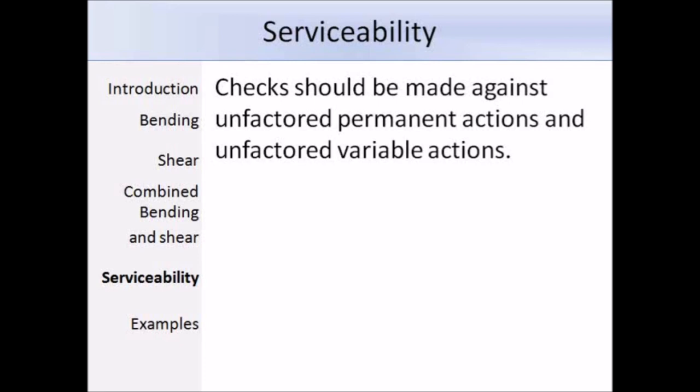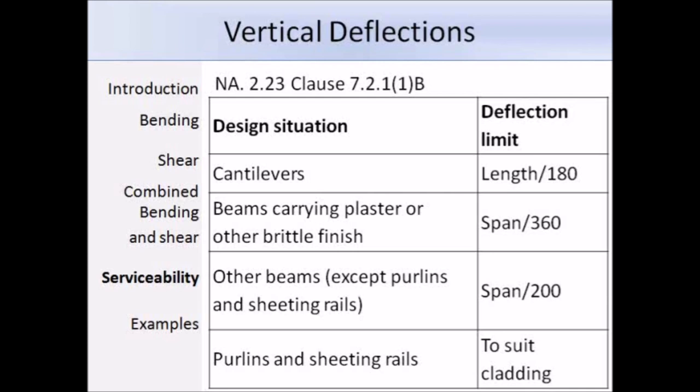EN 1993, Part 1-1, Clause 7.2.1 states that the National Annex should be referred to when determining the maximum allowable vertical deflection. The following table is taken from NA 223, Clause 7.2.1, Part 1-B. For a cantilever, the deflection limit is the length over 180. For beams carrying brittle finishes, the limit is the span over 360. For other beams, the limit is the span over 200. And for purlins and sheeting rails, the vertical deflection limit depends on the cladding.